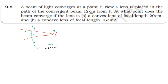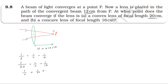Now let's apply the lens formula. The formula is 1/f = 1/v − 1/u. So for the convex lens, 1/20 = 1/v − 1/12. Therefore, 1/v = 1/20 + 1/12.